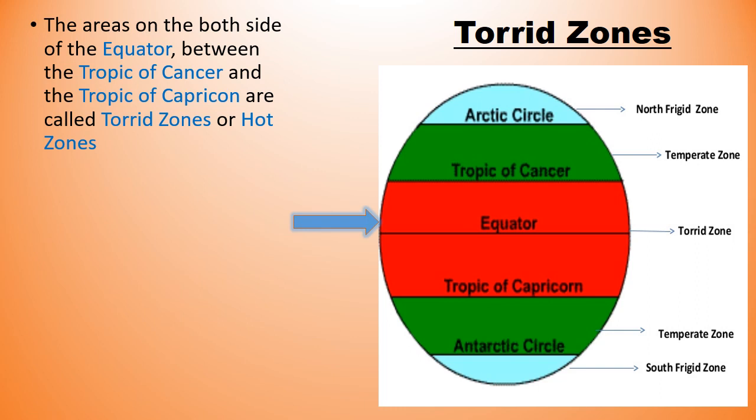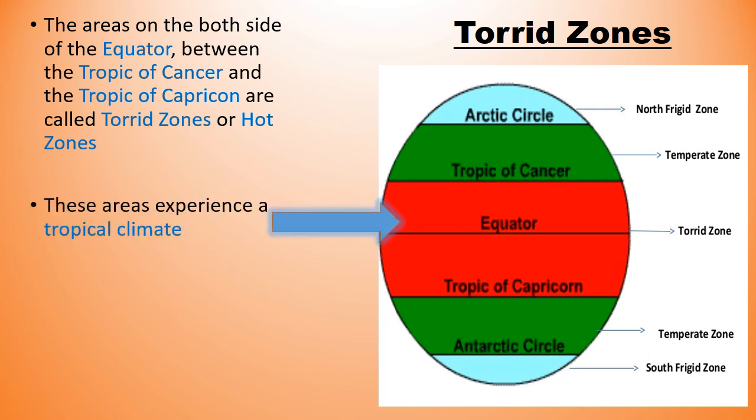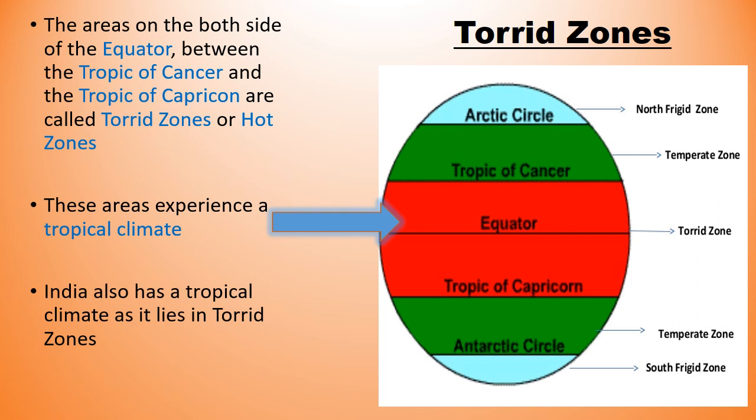The areas on both sides of the equator between the Tropic of Cancer and the Tropic of Capricorn are called Torrid Zones or hot zones. These areas experience a tropical climate. India also has a tropical climate as it lies in the Torrid Zone.